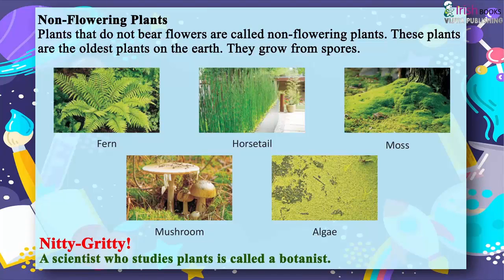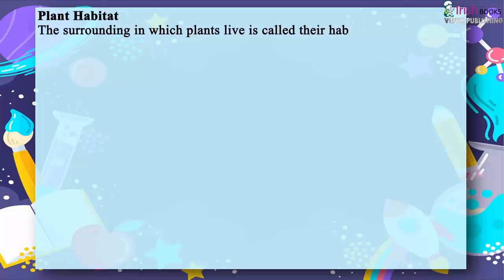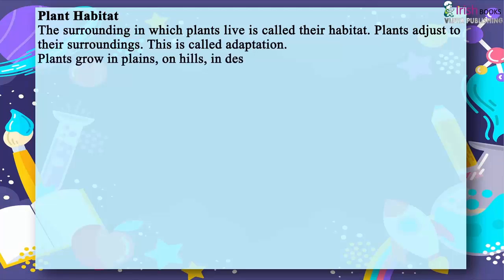Plant habitat: The surroundings in which plants live is called their habitat. Plants adjust to their surroundings — this is called adaptation. Plants grow in plains, on hills, in deserts, in water, etc.